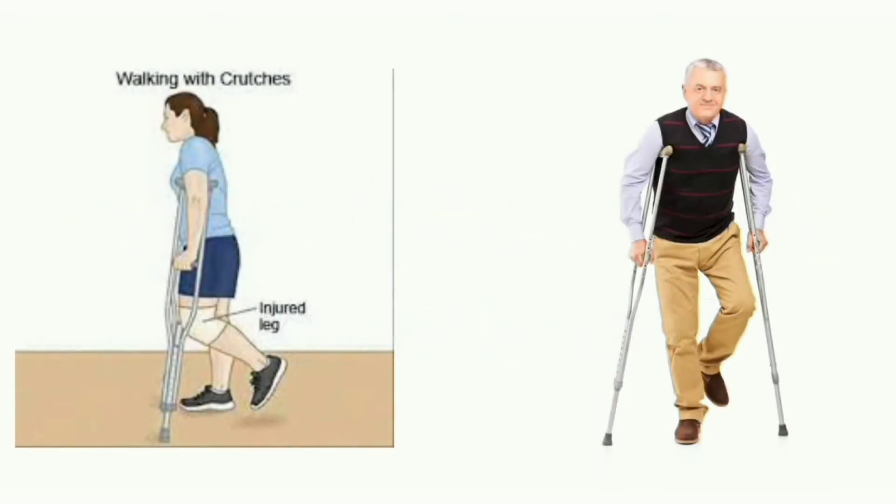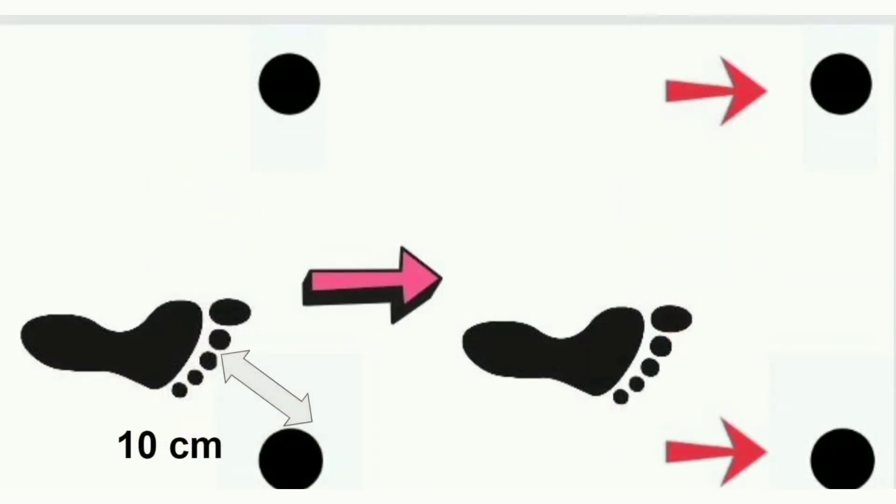When using axillary crutches, do not put pressure on the axillary region. The body's complete weight should be transferred to the hands. When placing crutches, place them about 10 cm forward and lateral to the foot.